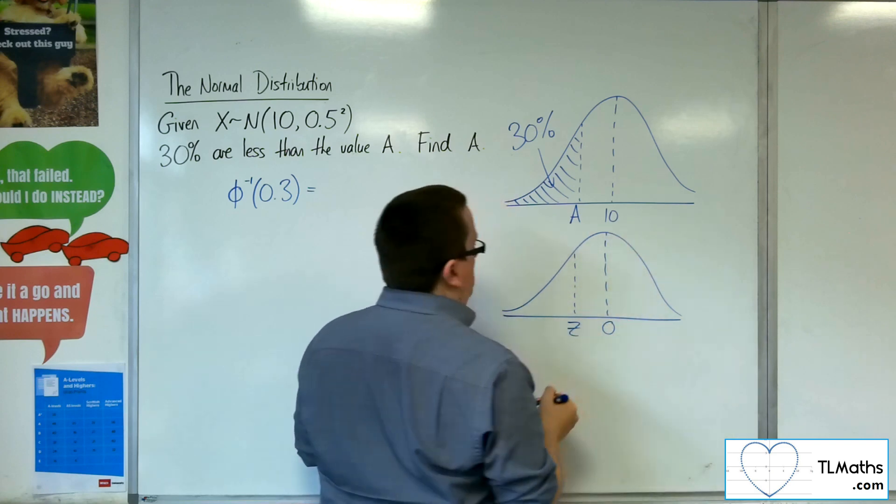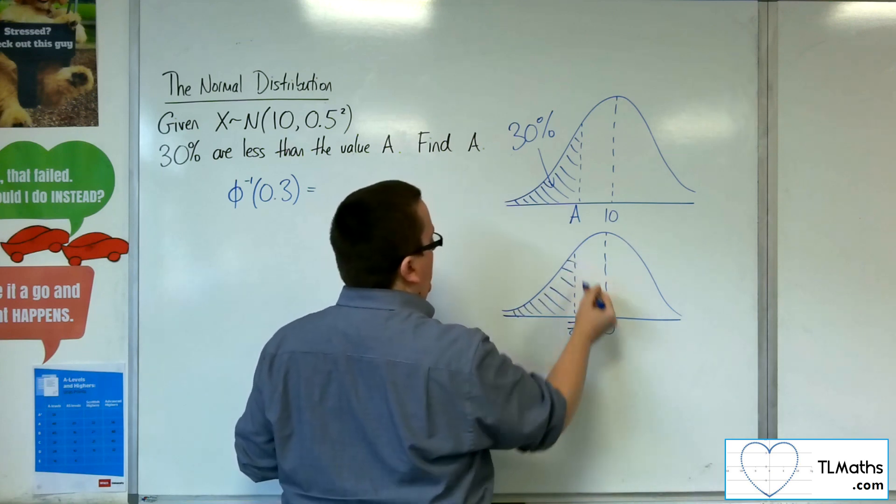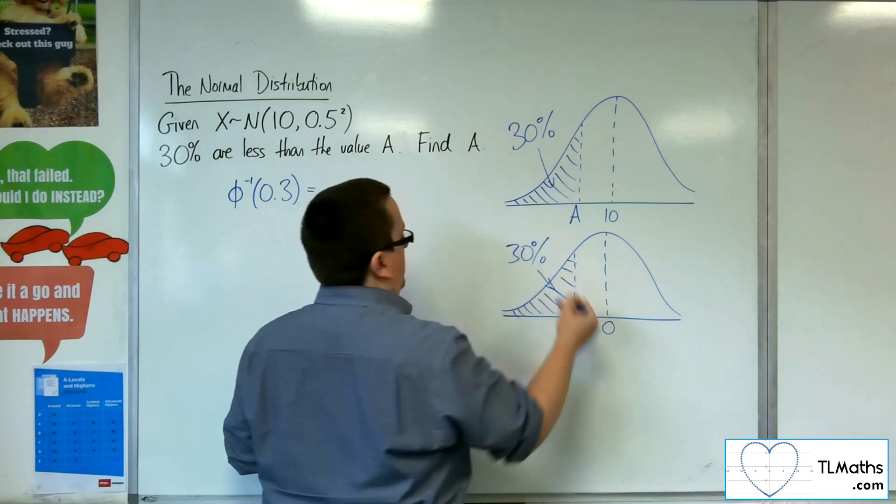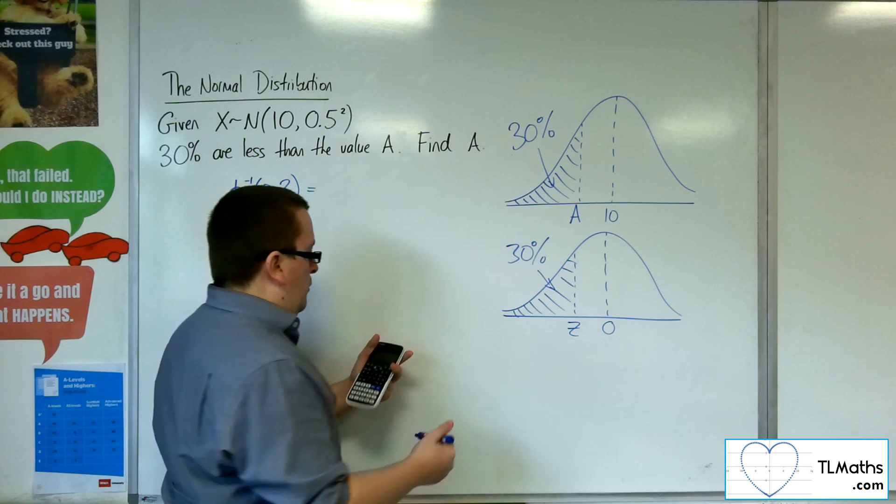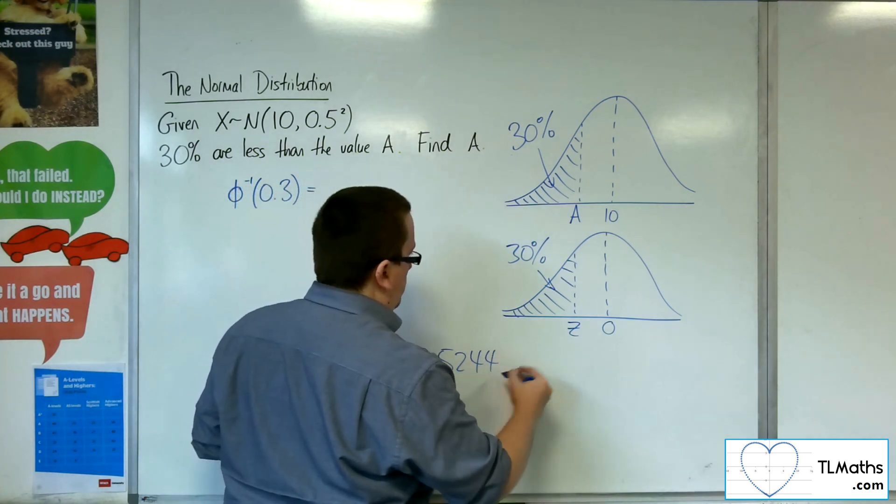Where this is a z-value, and this is the same area. That's 0.3. And what I get on my calculator is this minus 0.5244. So that is your z-value.